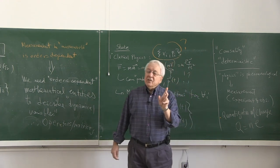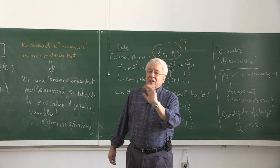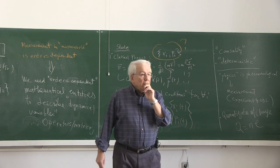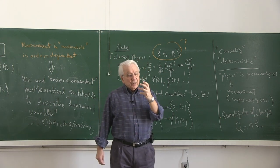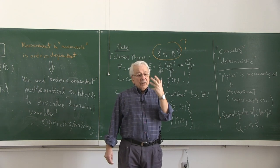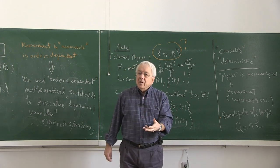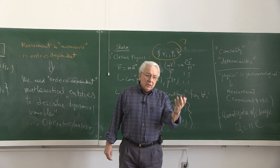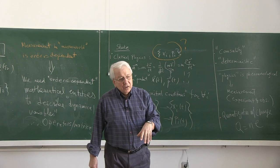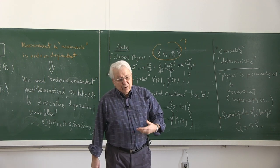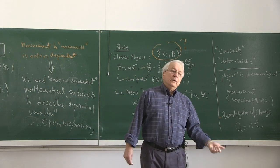There is no counterpart of spin in classical physics — you cannot mimic it as a spinning top; that's wrong. It is the angular momentum an object still carries when it is put at rest. Because when it's moving, there is orbital angular momentum, but when it's put at rest and still manifests angular-momentum-like behavior, it must be purely quantum mechanical.